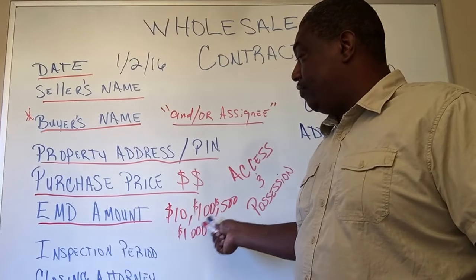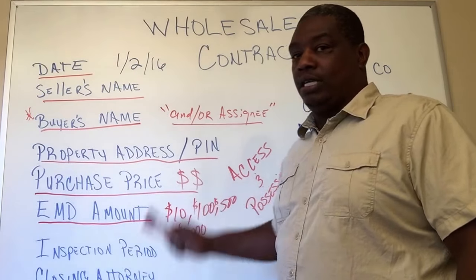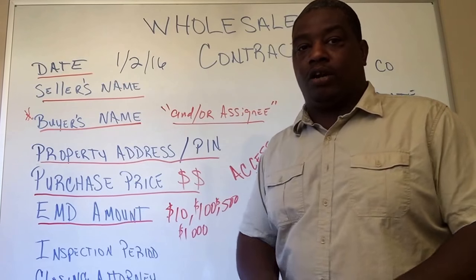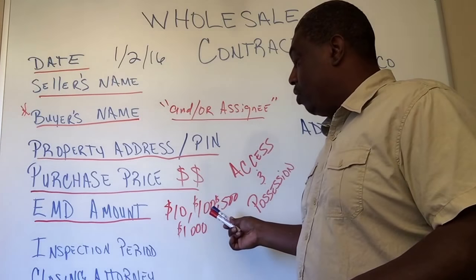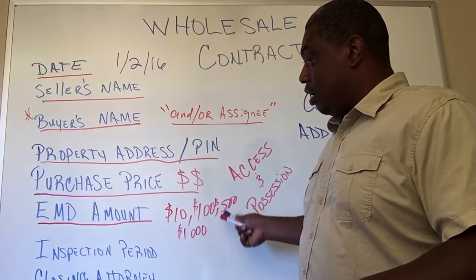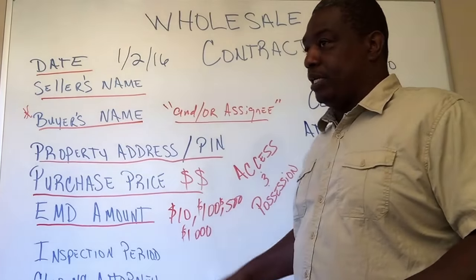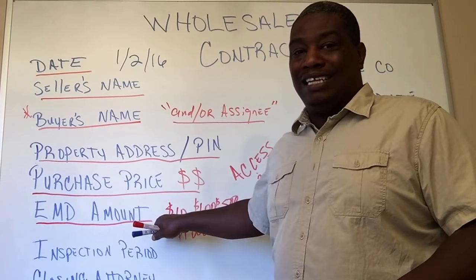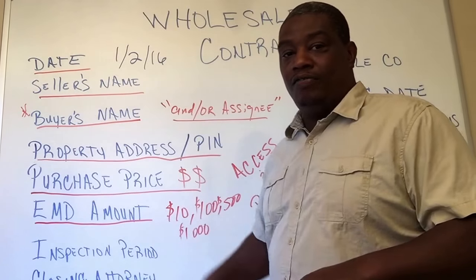Earnest money doesn't have to be cash — it can be any consideration. For example, if you're an electrician and you agree with the seller to install three new ceiling fans totaling six hundred dollars, you can write that in the contract as your earnest money deposit — that is legal consideration. We've done it before where the owner didn't want to clean out the property, so our earnest deposit was paying for the cleanout and securing a dumpster. It can be services or money, but it has to be some kind of consideration.